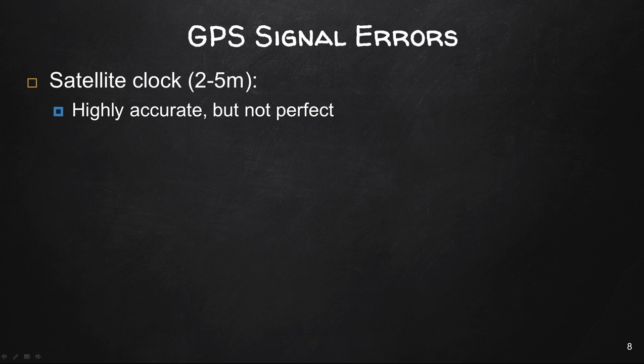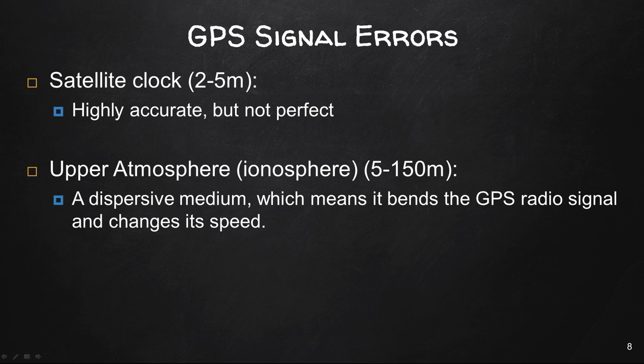By modeling ionosphere characteristics, GPS monitoring stations can calculate and transmit corrections to the satellite, which in turn pass these corrections along to the receivers. Only about three quarters of the bias can be removed, however, leaving the ionosphere as the second largest contributor to the GPS error budget. The upper atmosphere or ionosphere contributes 5 to 150 meters of accuracy error.